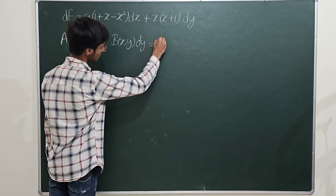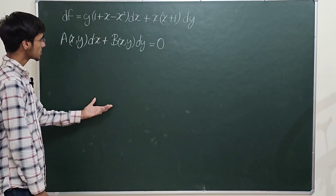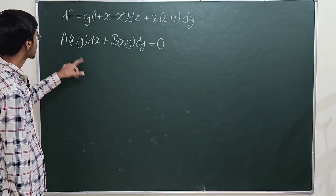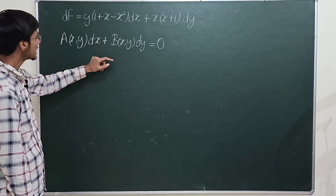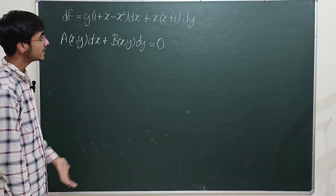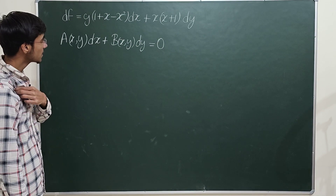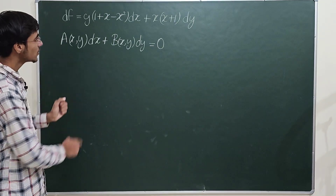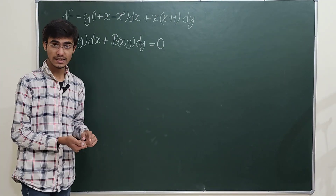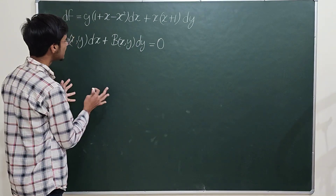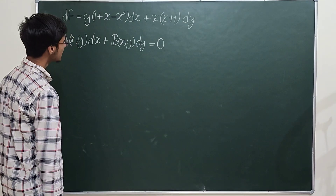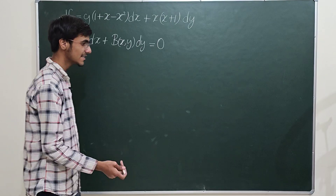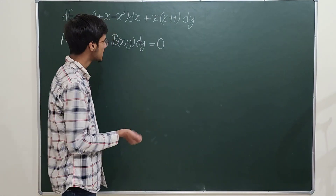That is why we bring in integrating factors. When you equate the equation to zero, it takes the form: A(x,y) plus B(x,y) dy/dx equals zero. If you can find an integrating factor that makes it an exact differential, things get really easy and you can solve the equation.